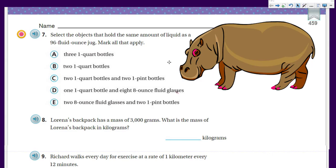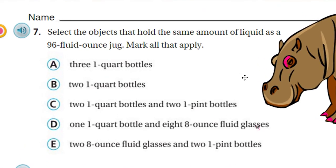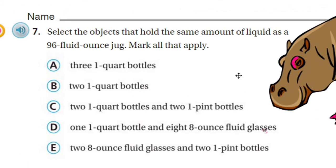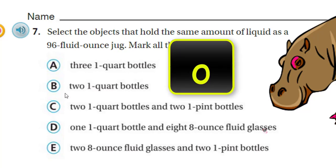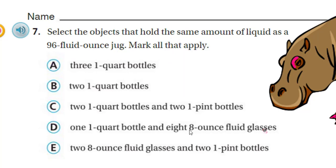Let's go ahead and start covering page 459. 'Select the objects that hold the same amount of liquid as a 96 fluid ounce jug — mark all that apply.' We have three one-quart bottles, two one-quart bottles... Let's break this down. We're back to those English units that Mr. Warra says he's not too crazy about because it requires a lot of memorizing.